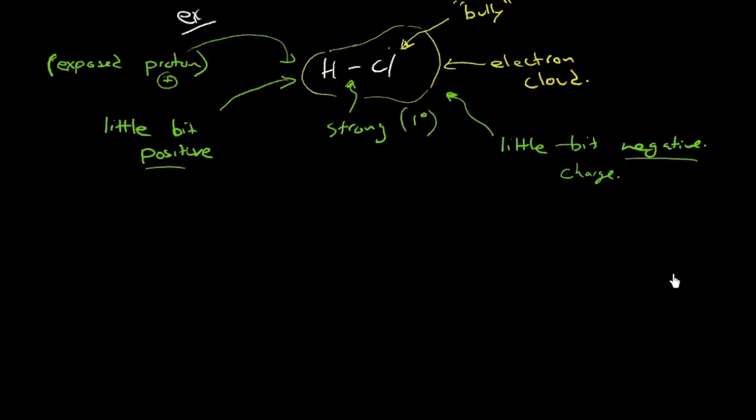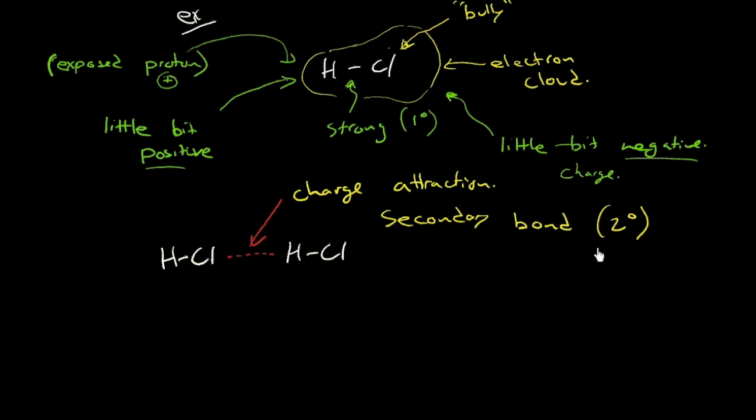So then what would happen if you had two HCl molecules in the vicinity of one another? Well, you've got that little bit of a positive end on one, and a little bit of a negative end on the other. And so there would be a charge attraction. There would be this charge attraction between them, between the oppositely charged ends, charge attraction. And it is that charge attraction that is the secondary bond. We'll explore it a little bit more. But that's it. That's the secondary bond. Sometimes I use the symbol 2 degree for secondary. It's often drawn as a dashed line like this to distinguish it from a strong primary bond.